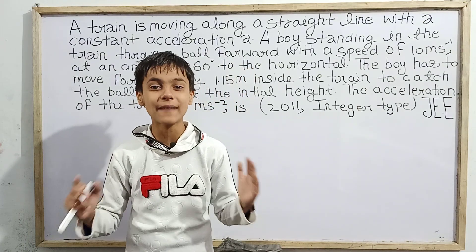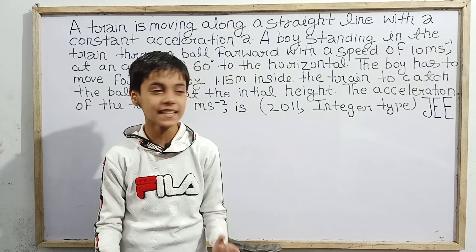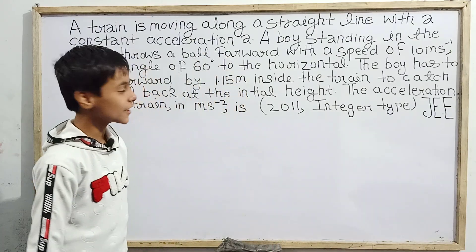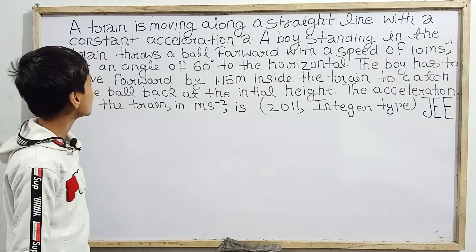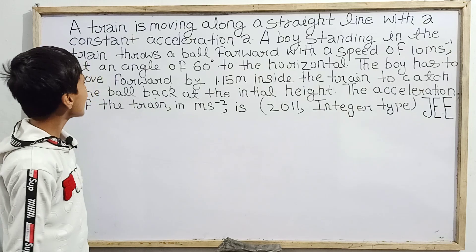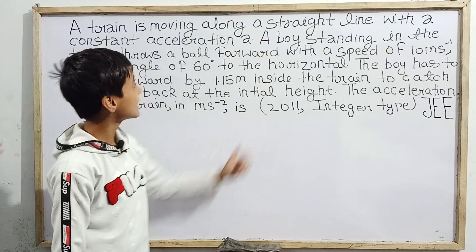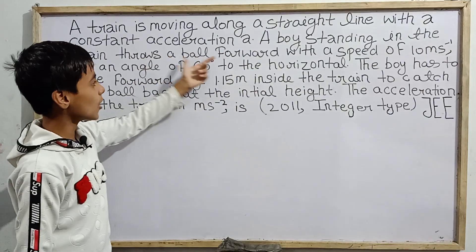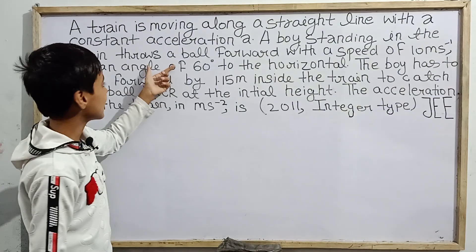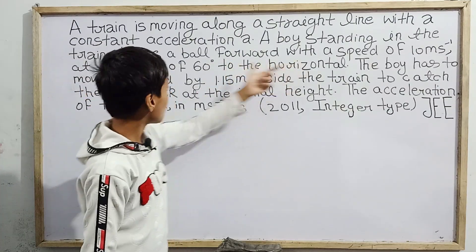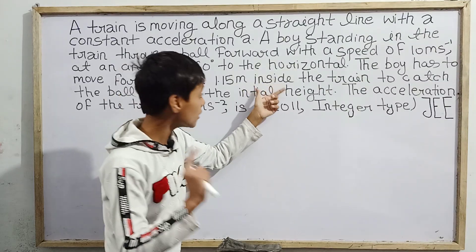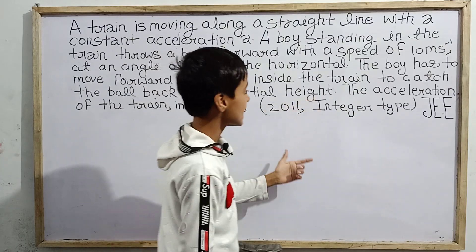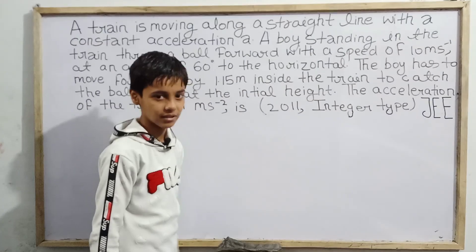Welcome everyone, this is Sarim Khan back with a new JEE question on kinematics. Today we are going to solve a question: a train is moving along a straight line with constant acceleration a. A boy standing in the train throws a ball forward with a speed of 10 m/s at an angle of 60 degrees to the horizontal. The boy has to move forward by 1.15 meters inside the train to catch the ball back at the initial height. Find the acceleration of the train in m/s².